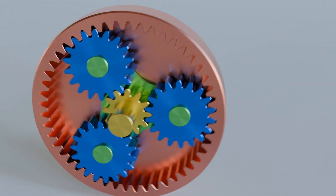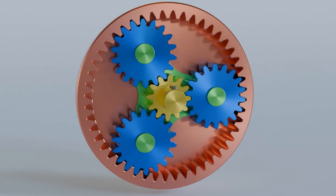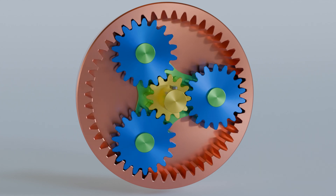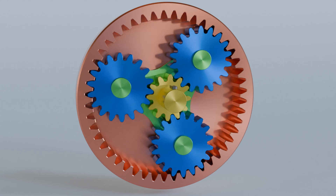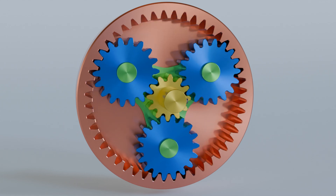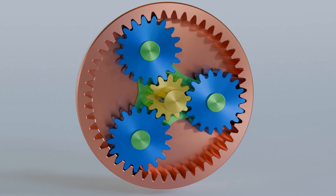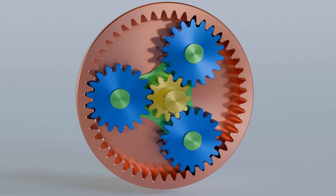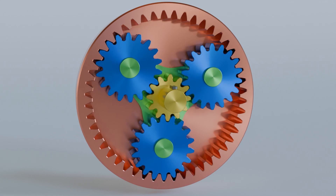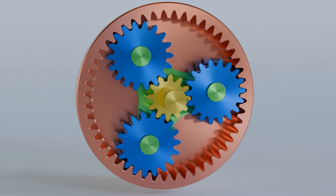However, this changes when the planetary gear is used in a different way. The output does not always have to be on the ring gear. It is now possible to use the carrier as the output while the ring gear is firmly locked. In this case, the input gear drives the idler gears around the fixed ring gear. The idler gears rotate around the central input gear like the planets around the sun — hence the name planetary gearbox.